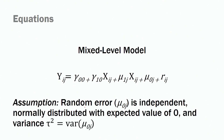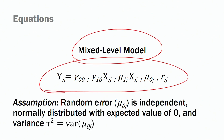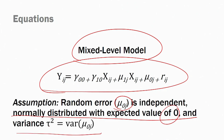Combining these, you get a mixed-level equation containing both between and within information. One critical assumption is that your random error for the lower, within level must be independent, normally distributed, with an expected value of 0 and variance tau-squared equal to the variance of that error term.